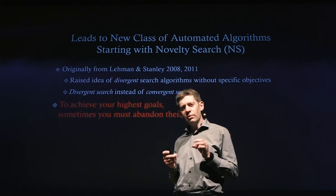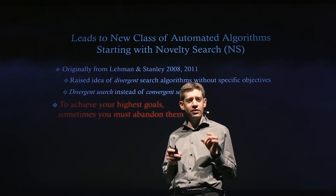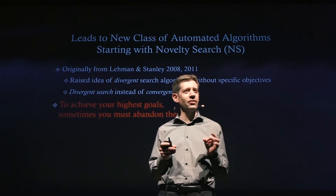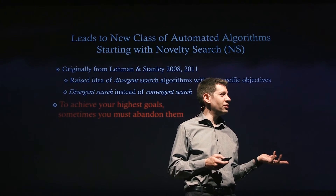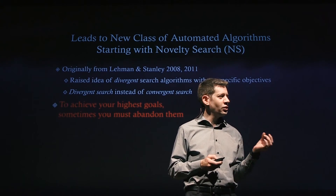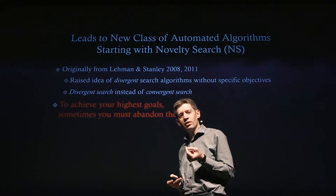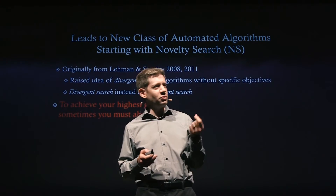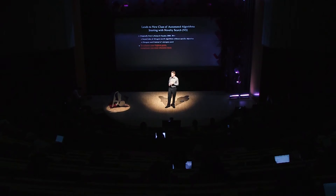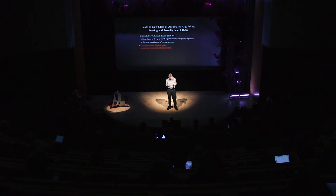Seeing Picbreeder and how people used the system was really eye-opening. I noticed that in almost every case where somebody discovered something interesting — like a picture of a butterfly — they were not trying to discover it. This is one of the interesting properties of divergent systems: often the best way to discover something is by not trying to discover it. We don't necessarily know which stepping stones will lead to the discoveries we're interested in.